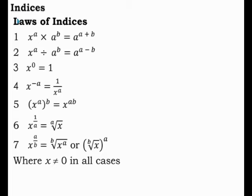The third law is x raised to the power 0, which is equal to 1. The fourth one is x raised to the power minus A, which is equal to 1 over x raised to the power A. The fifth law involves brackets: x raised to the power A, everything in brackets raised to the power B, which is the same as x raised to the power A times B.